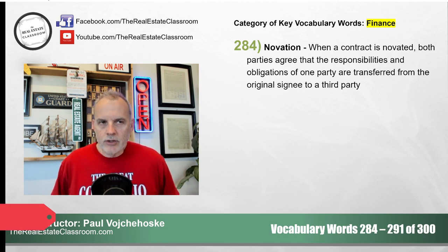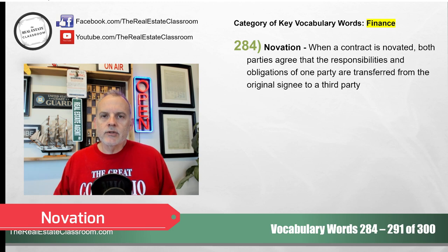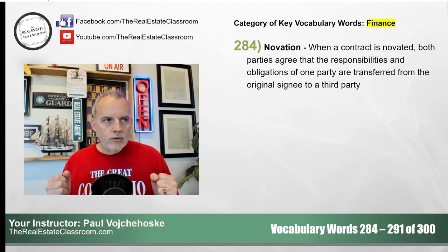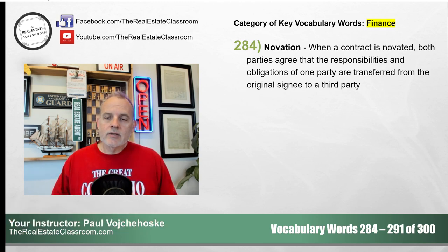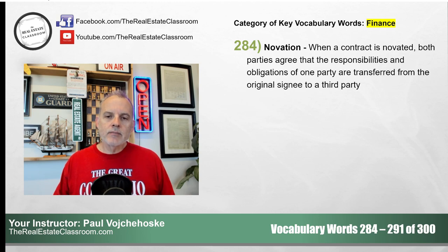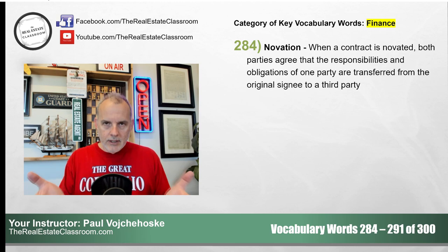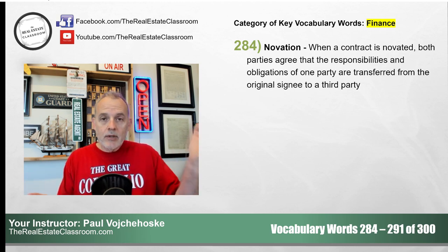284 is novation. Novation is a very complicated concept for many students to visualize and understand. It's simply when a contract is novated — both parties to that contract have certain responsibilities and certain obligations, and it allows one of the two parties enjoined in that contract to be replaced.